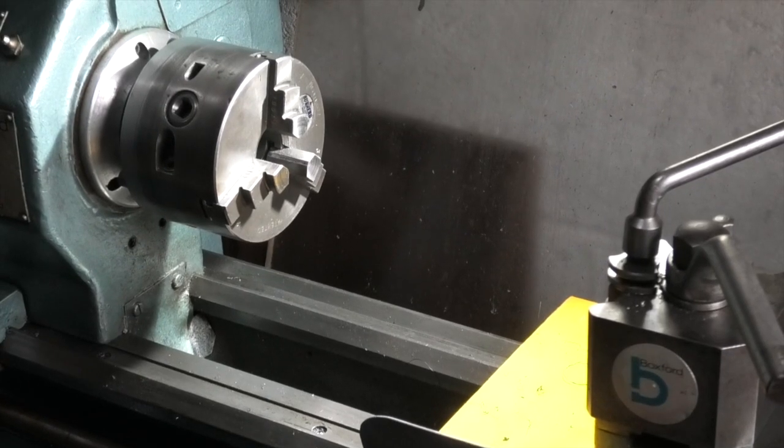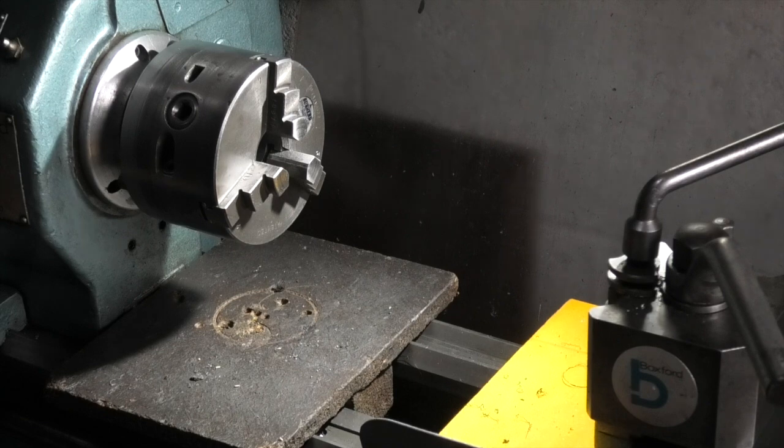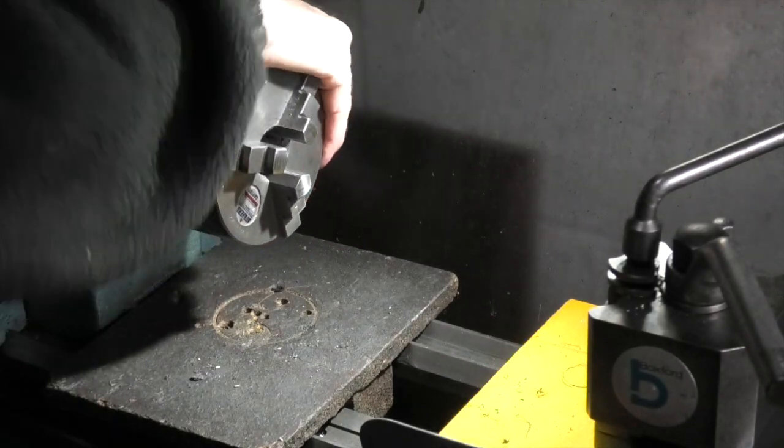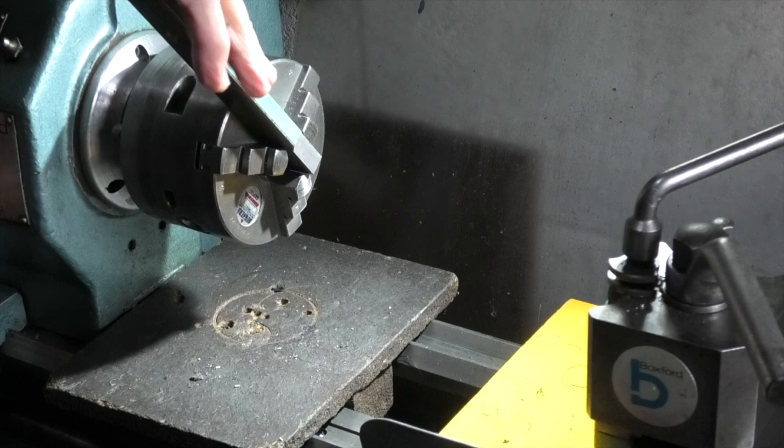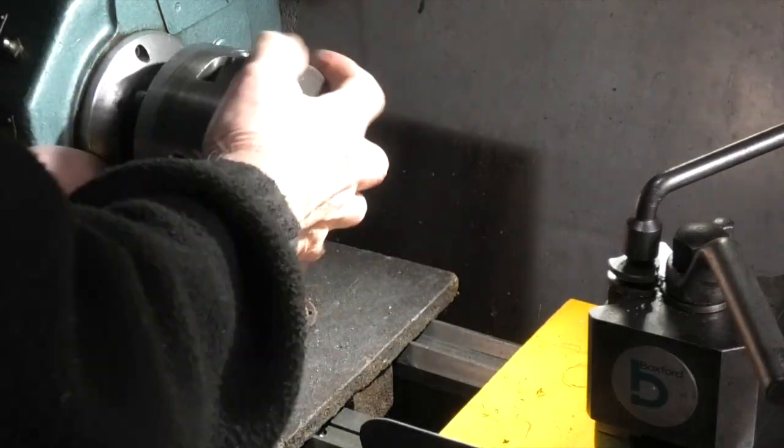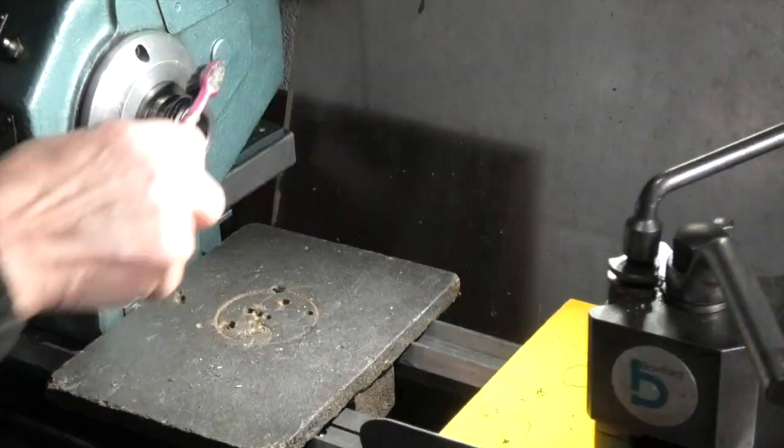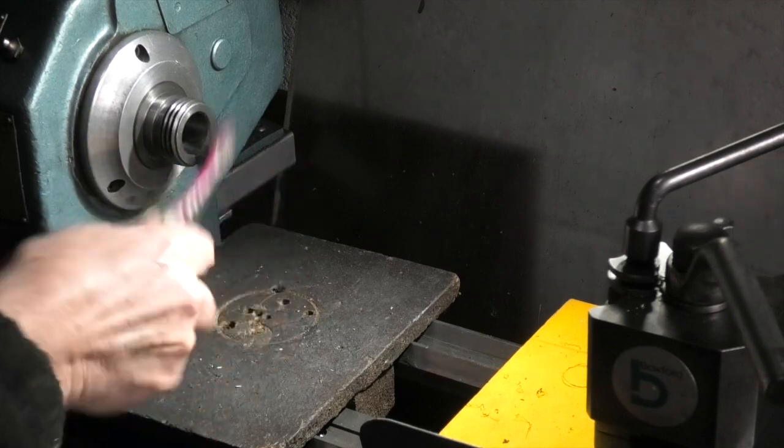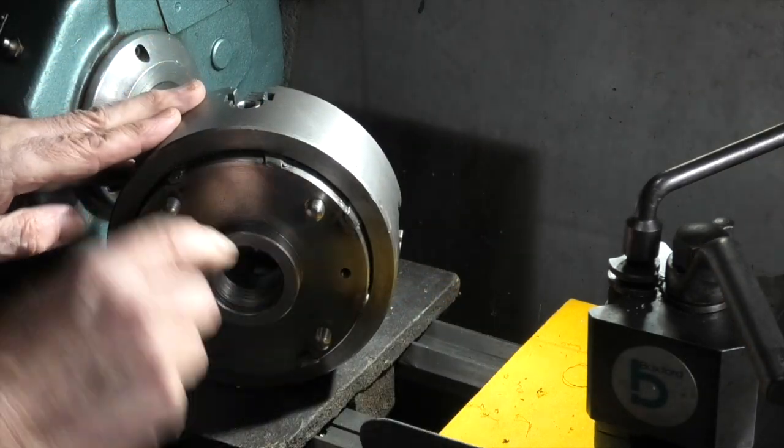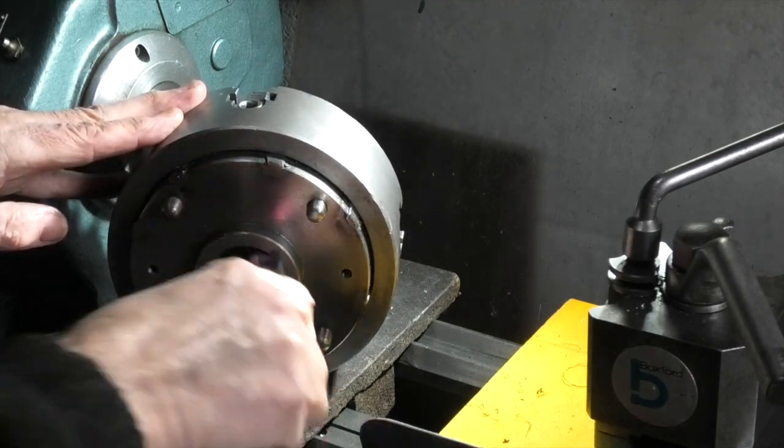The first thing I need to do is take the chuck off. As always I put a piece of wood on the bed just in case I drop that chuck I don't want to damage the bed. Turn the chuck around until the spindle locks engaged. Put a bar through the top, just tap it and unscrew the chuck. No damage to the bed. Clean the thread, just in case any bits of swarf have fallen through, and the face.